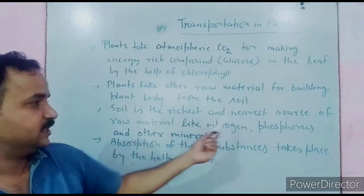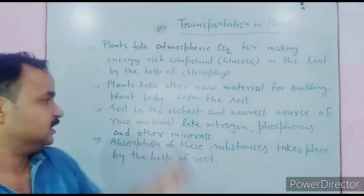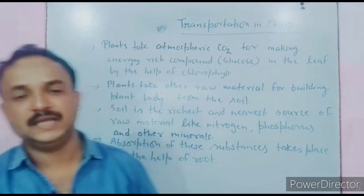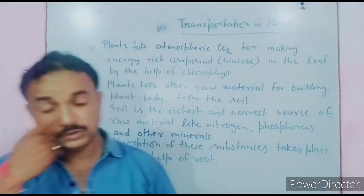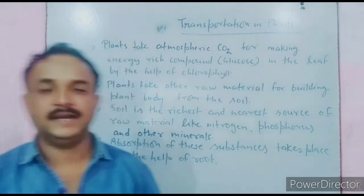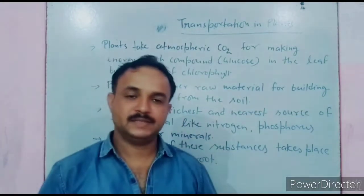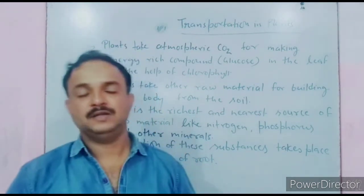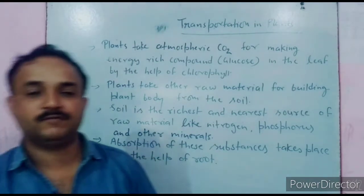Soil is the richest and nearest source of raw material like nitrogen, phosphorus, sulfur, and other minerals such as calcium, iron, cobalt, nickel, and copper. Absorption of these substances takes place by the help of roots.